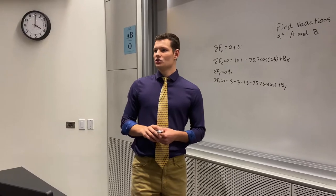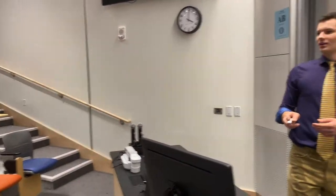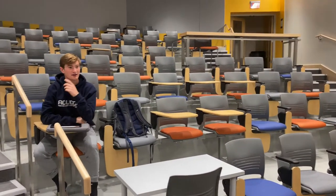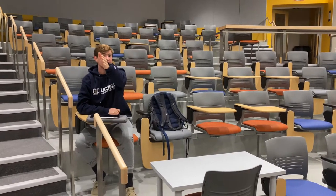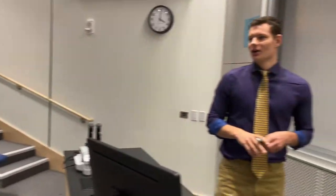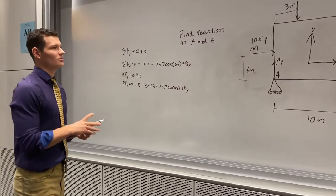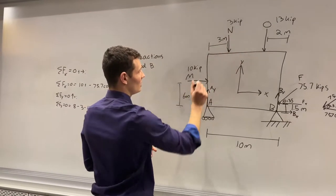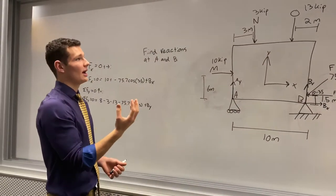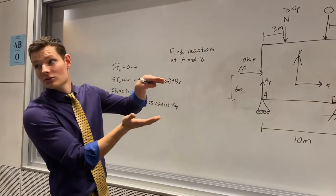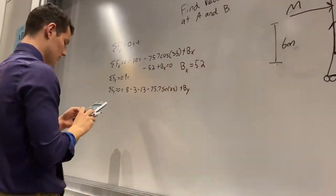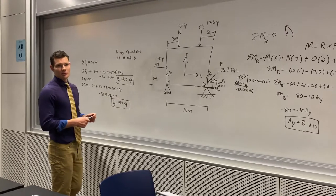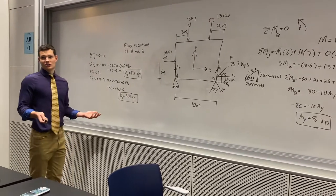Riley: in the sum of the moments you had distances — why are there no distances in the force equations? The force equations are strictly about the forces. It doesn't matter where they're acting as long as the direction is there. All forces acting up have to equal all forces acting down so that our body is in equilibrium. So we've determined all the reactions for the free body diagram to ensure equilibrium. Any questions? No — perfect.